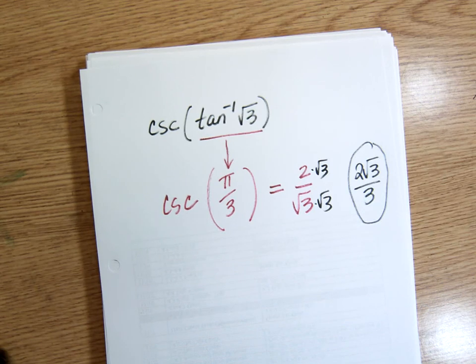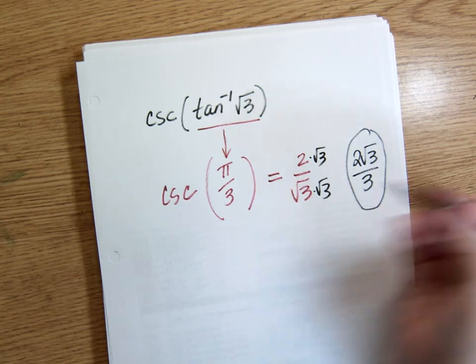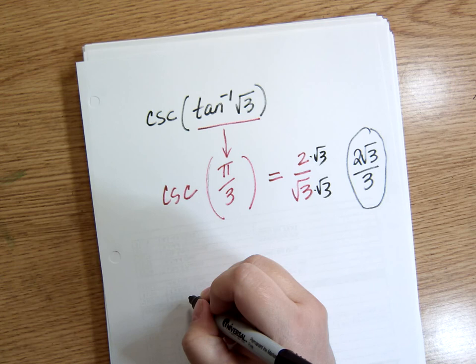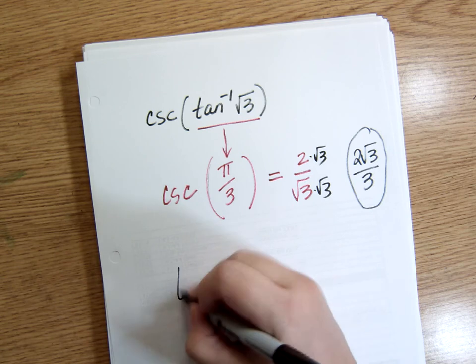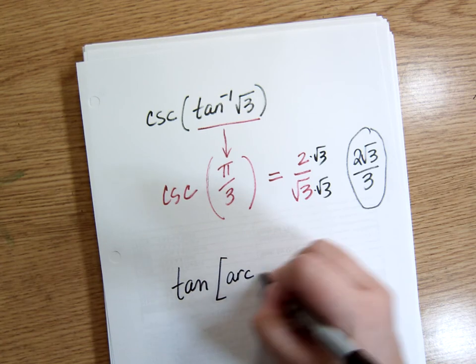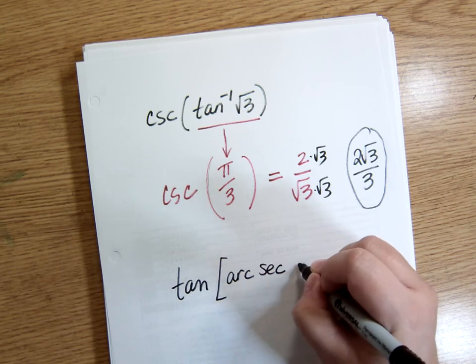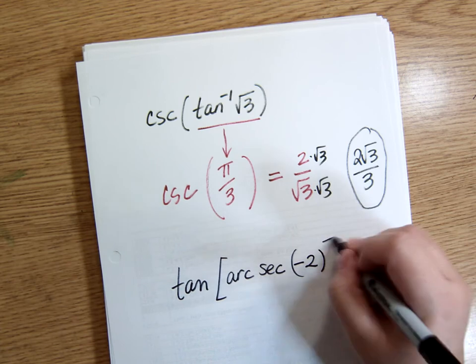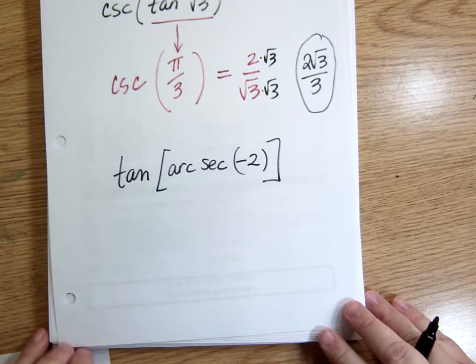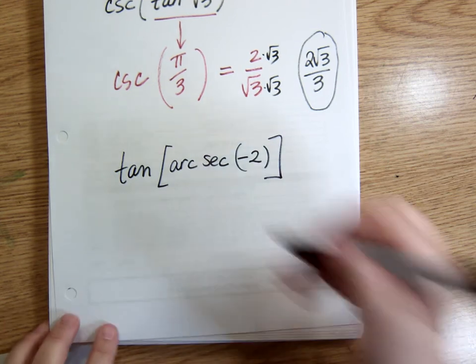How about this? Tangent of the arc secant of negative 2. So first off, I'm going to do just this part in here.